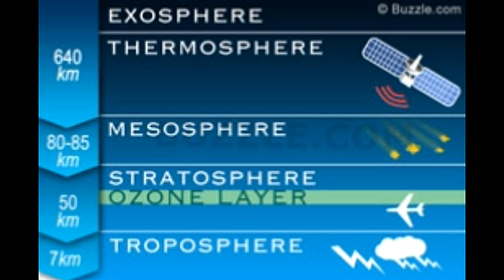The Earth is enveloped by an atmosphere that is composed of five layers, namely troposphere, stratosphere, mesosphere, thermosphere, and ionosphere. Read on to know the significance of each layer of the Earth's atmosphere.